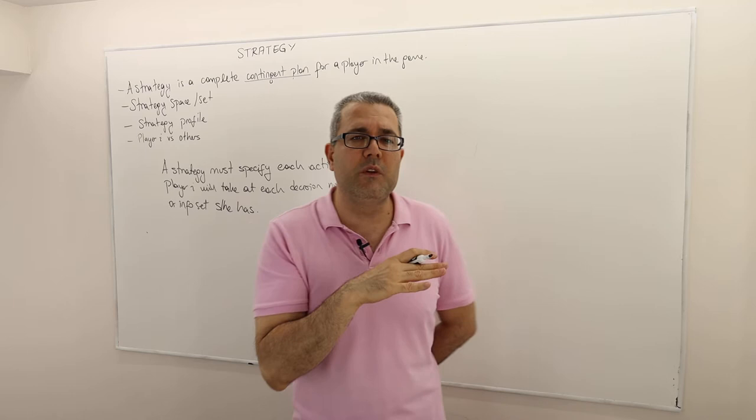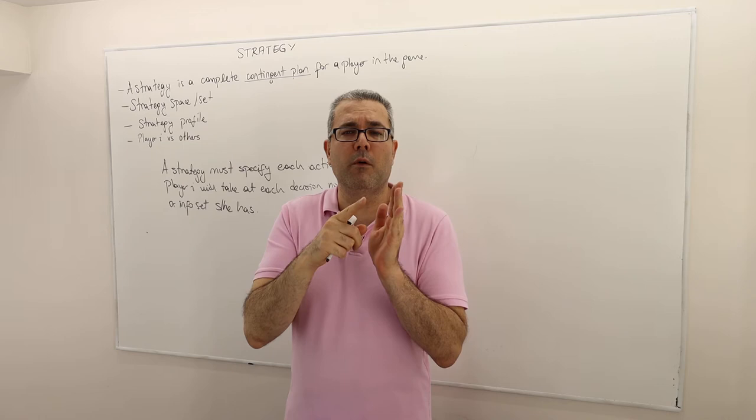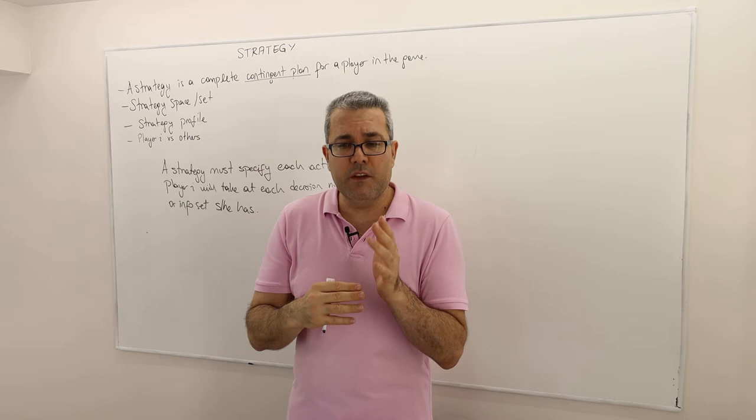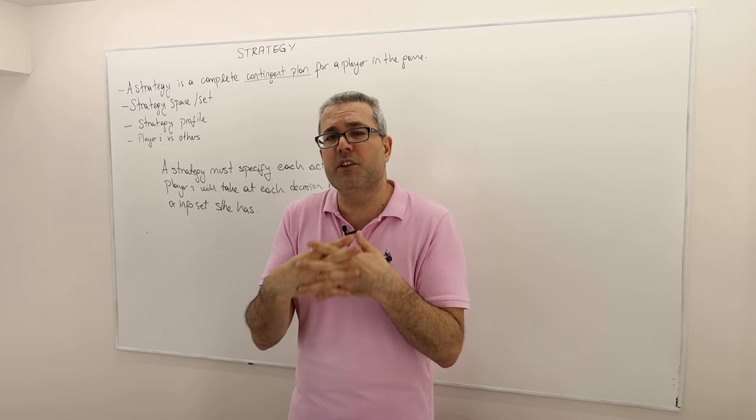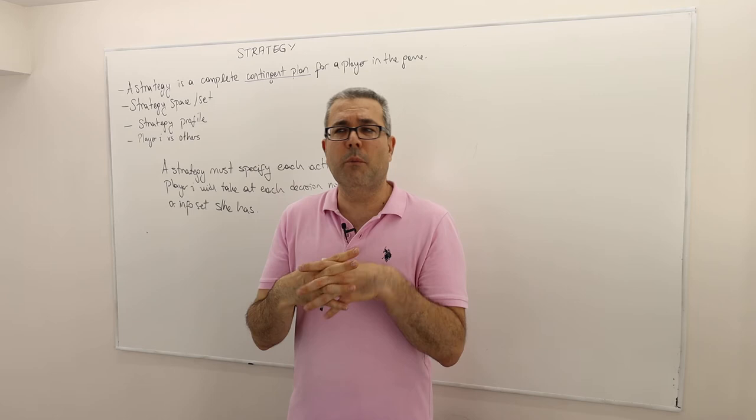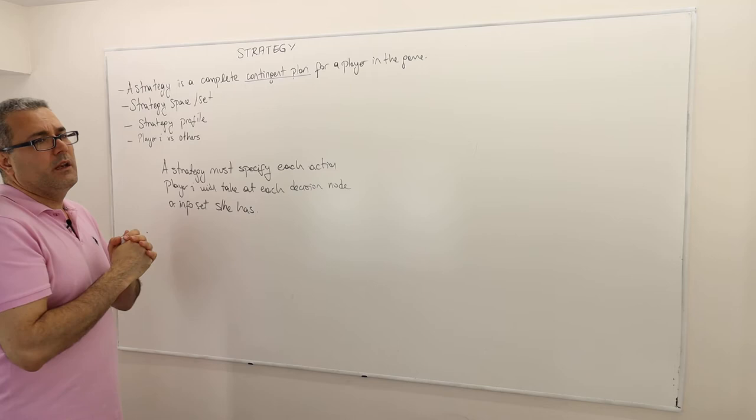It's not, a lot of students confuse with strategy and path of play. It's not what you will do given your opponent does a sequence of moves, it is what you will do given that whatever your opponent, whatever sequence of moves your opponent may have. So the strategy is much more complex than I'm going to play this action and that action. It's like, yeah, but when, under what circumstances? So you have to specify all these.